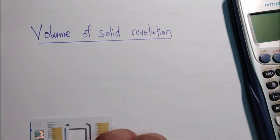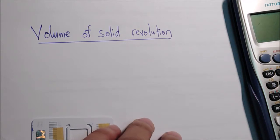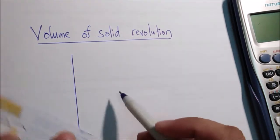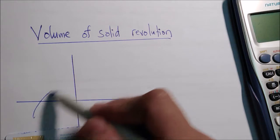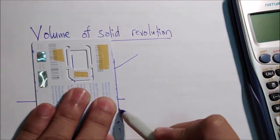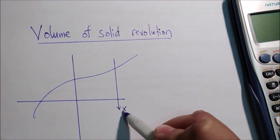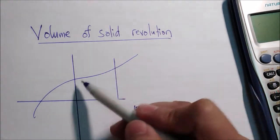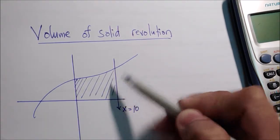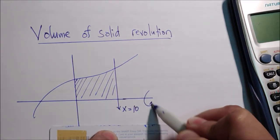Hi, this is engineer Appy and welcome to our online review. Today I will discuss about volume of solid of revolution. This volume is the volume generated by rotating a plane area about a certain axis. For example, we have a curve with a given equation and a certain boundary, like x equals 10, and we find the volume generated by this area rotating about the x-axis.